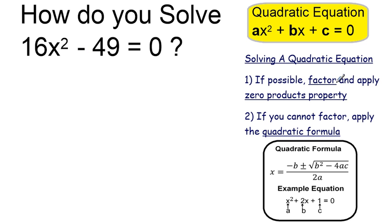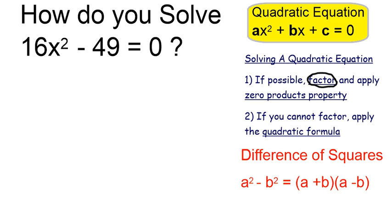So I can still use my same strategy of attempting to factor it, and then if I can, use the zero products property. Because the equation is a binomial, we can try to factor it as a difference of squares.